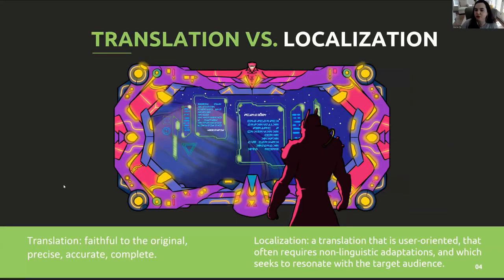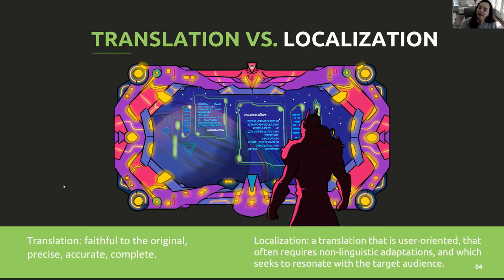So, translation versus localization: why do we talk about localization when we talk about video games? When we talk about a good quality translation, we generally use adjectives such as precise, accurate, and complete — nothing was omitted. But when we talk about localization, we mean a translation that is user-oriented, that often requires non-linguistic adaptations, and which seeks to resonate with the target audience. That means we want the game to have the same effect on the culture and in the language to which it is localized. That is why it is sometimes said that we localize ideas, we localize emotions rather than words. We have to think in terms of the intention of the original text — is it supposed to be funny, is it supposed to provoke a certain emotion?